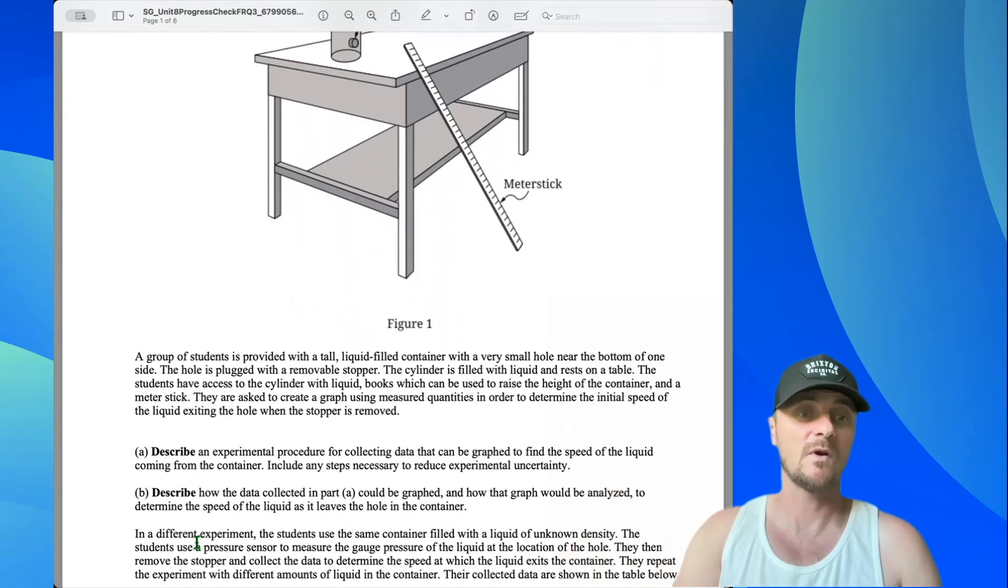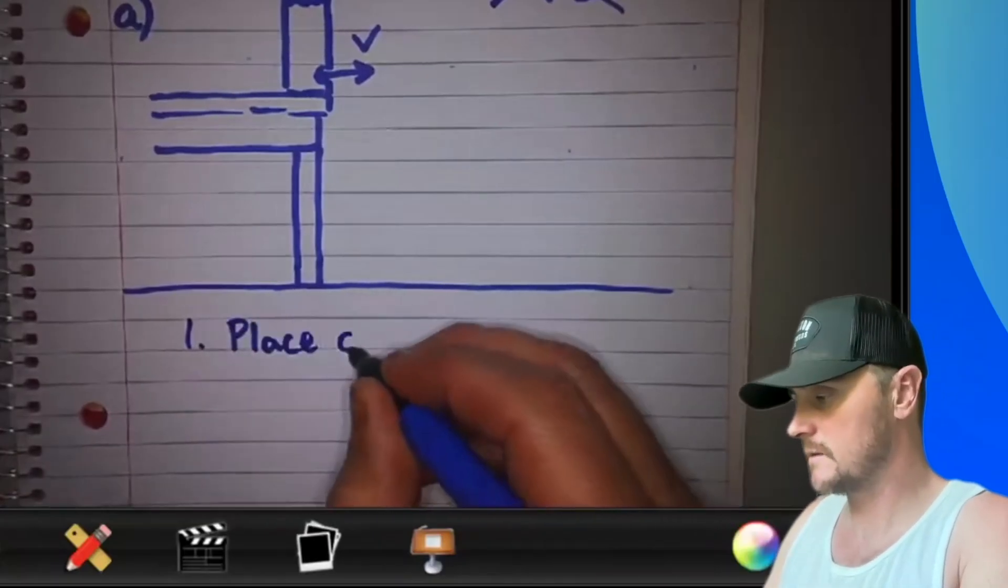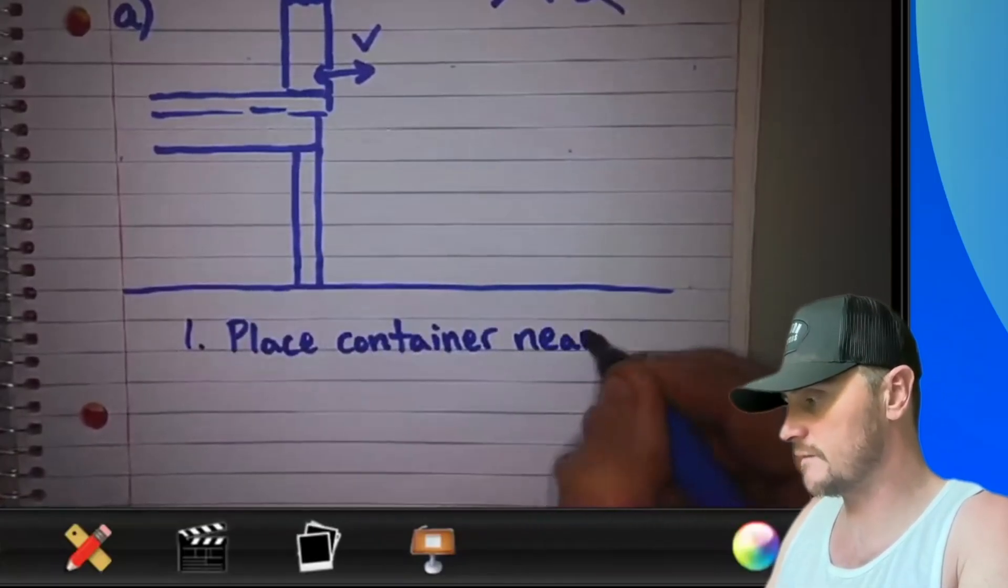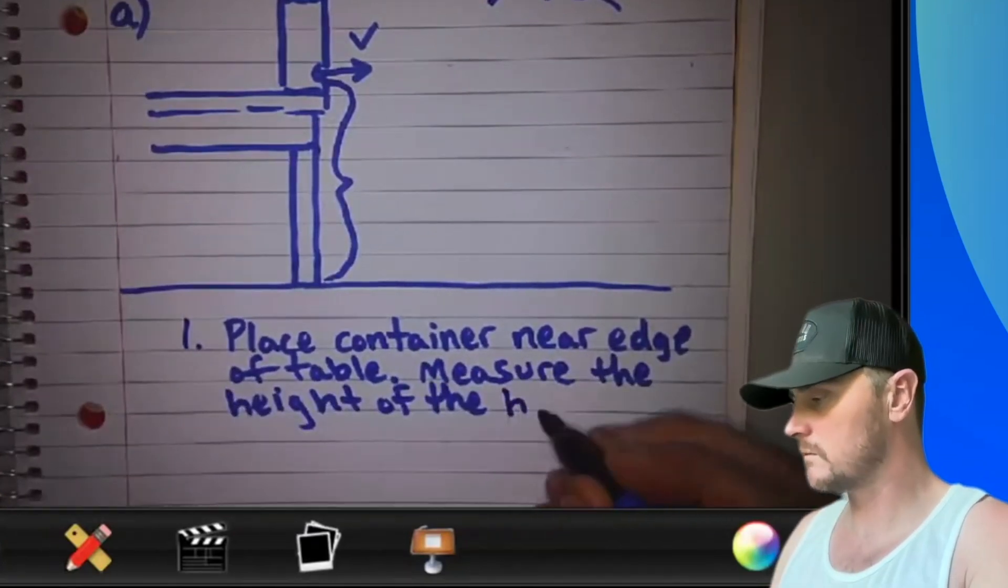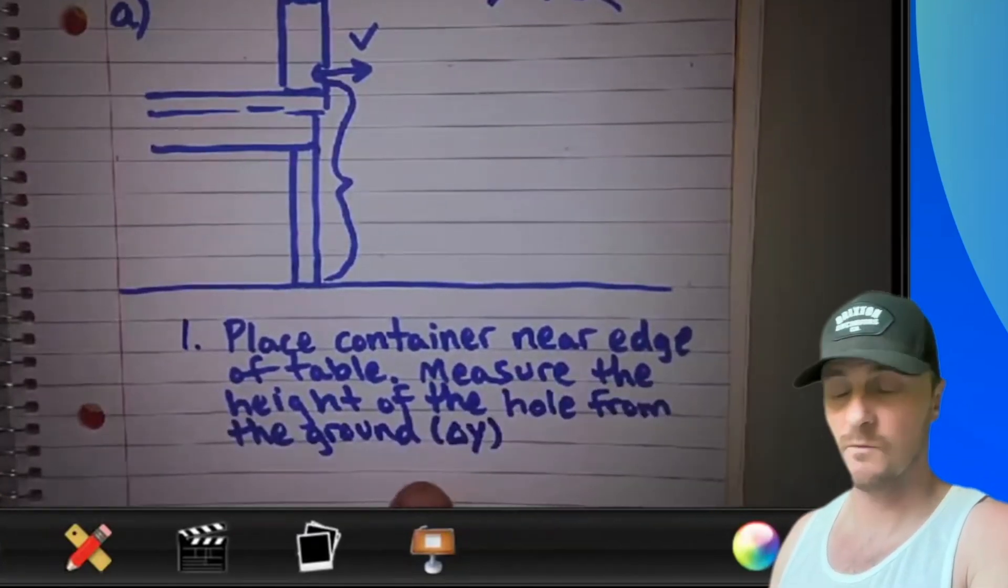I'm moving on to part A. Describe an experimental procedure for collecting data that can be graphed to find the speed of the liquid coming from the container. Include any steps necessary to reduce experimental uncertainty. Step 1: Place container near edge of table. Measure the height of the opening of the hole from the ground, and we'll call this delta Y.